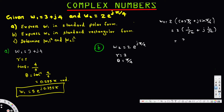Multiplying these by 2 gives us 2 over root 2 for the real part and j times 2 over root 2 for the imaginary part. This is the rectangular form of the given complex number, and this is our final answer for part B.